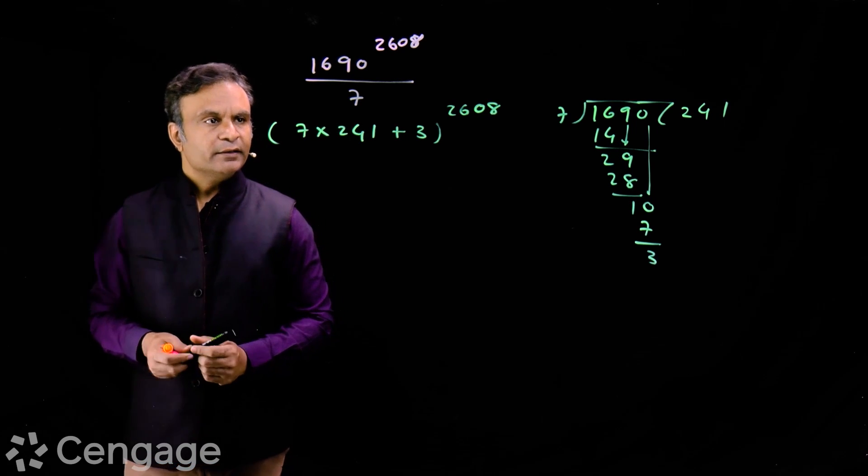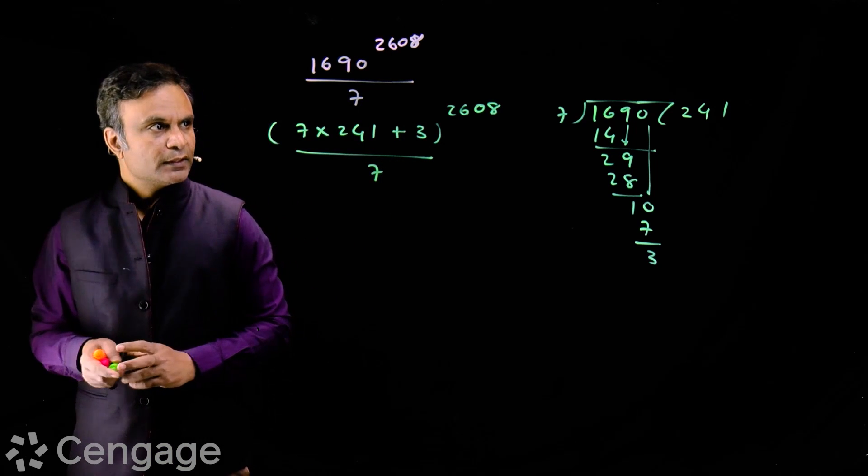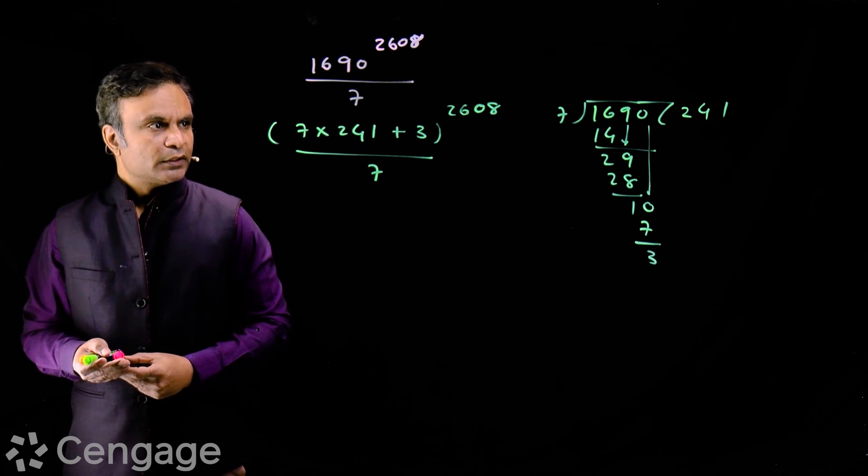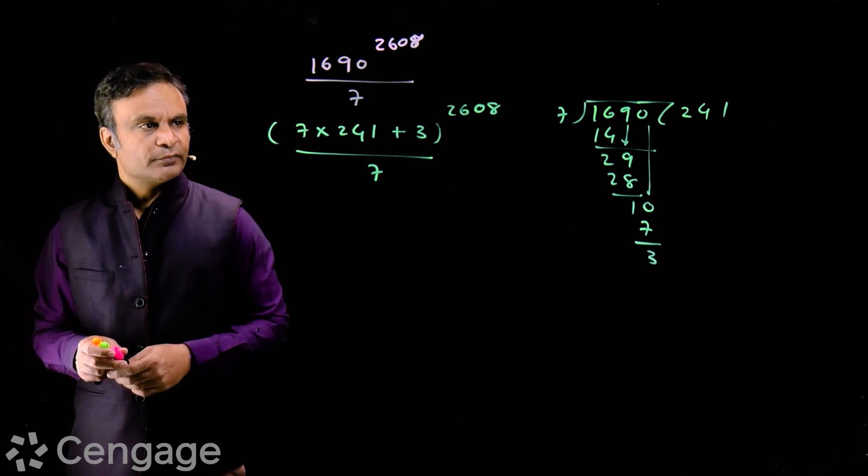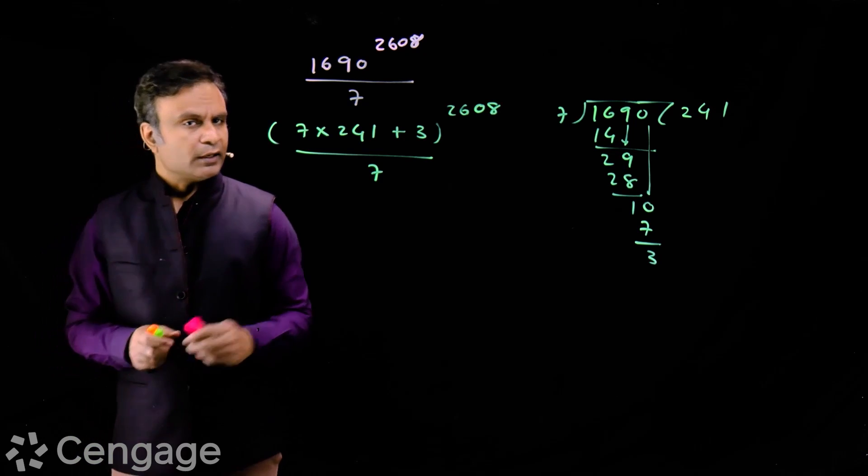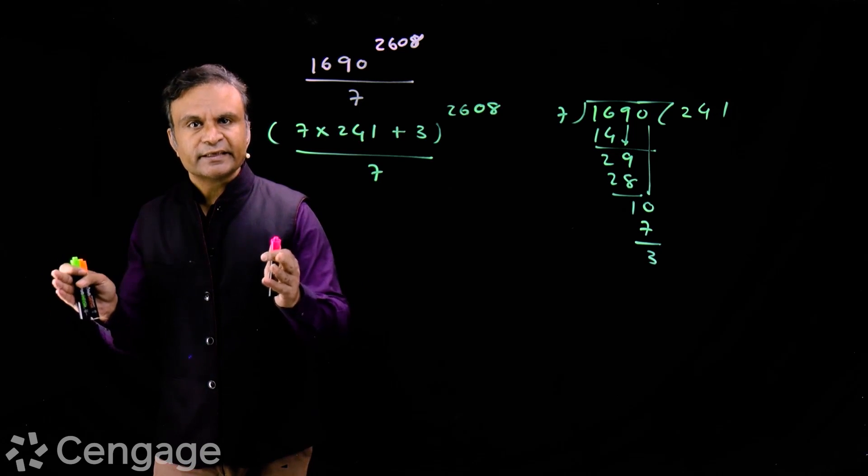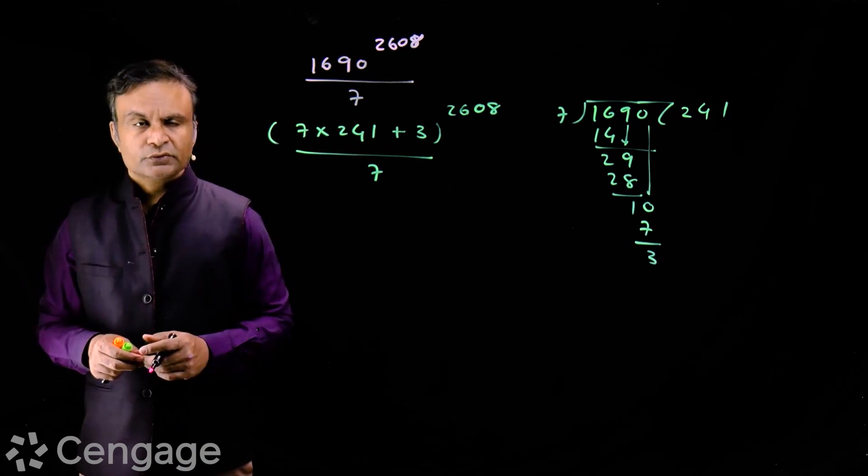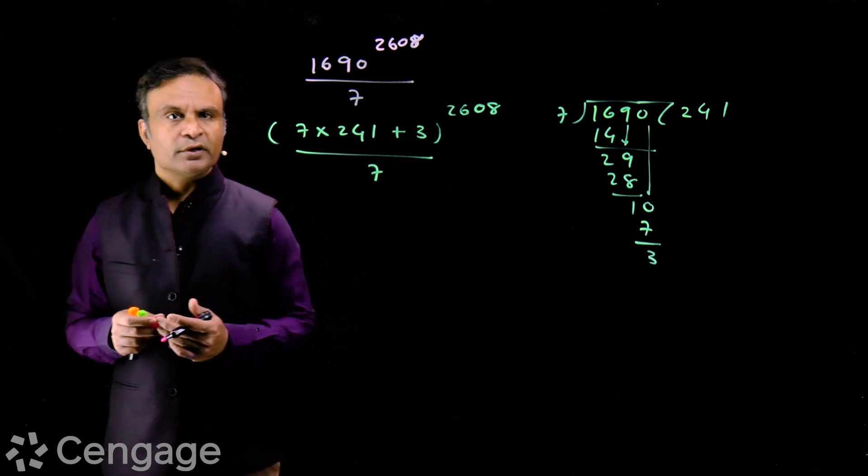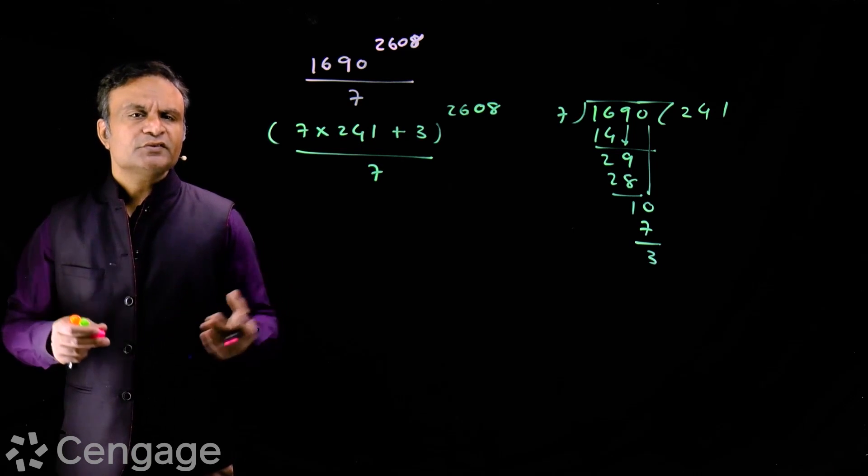Now we have to find remainder when this number is divided by 7. Now what happens when I expand this using binomial theorem? Except last term, in each term we have a factor 7 at least once. So leaving the last term, remaining terms form a number of 7k type, it is a number divisible by 7.